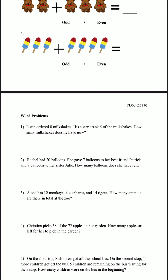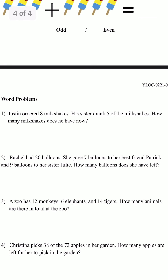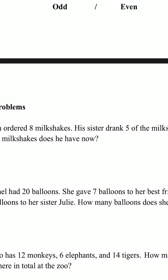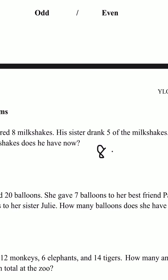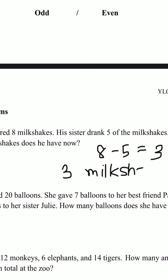Now we're going to try number 1. Justin ordered 8 milkshakes. His sister drank 5 of the milkshakes. How many milkshakes does he have now? So he ordered 8 and his sister drank 5, so we're going to have to do 8 minus 5. 8 minus 5 is 3. So now he would have 3 milkshakes left.